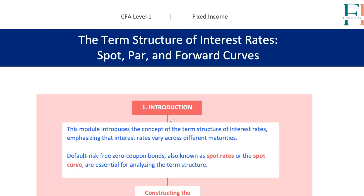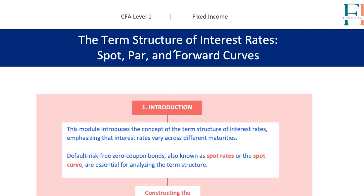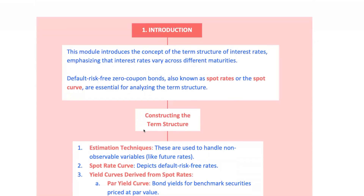All right, future financial wizards, today we're diving into one of the most fundamental concepts in fixed income analysis: the term structure of interest rates. If you've ever wondered how interest rates change with different maturities, or why certain rates are higher or lower for longer terms, you're in the right spot. We're going to break down the three main yield curves — spot, par, and forward — and how they help us understand the landscape of interest rates over time. So grab your calculators and let's get started.